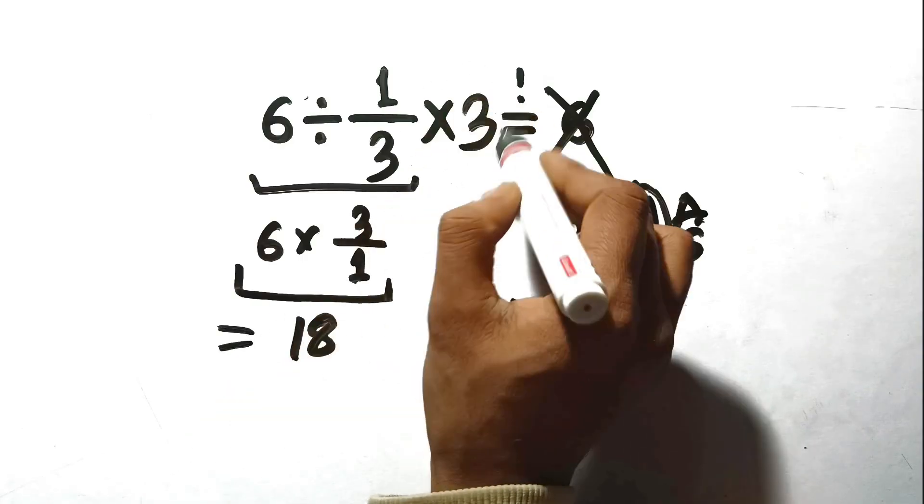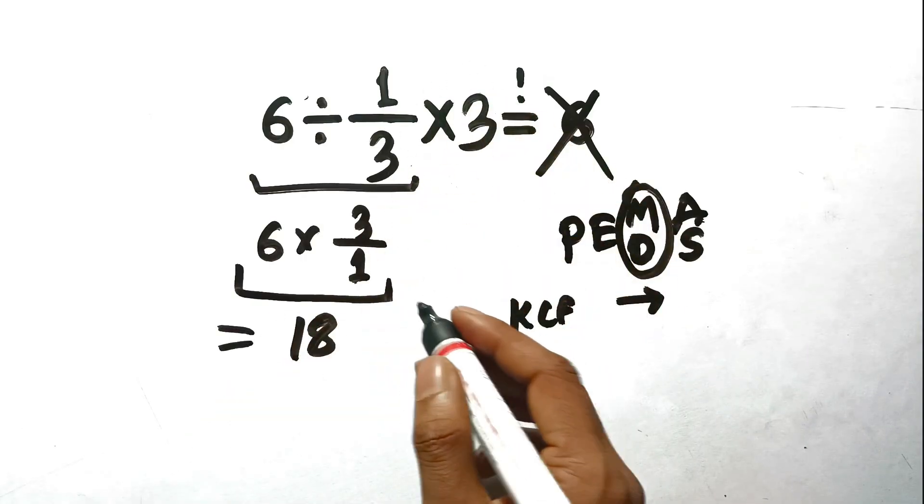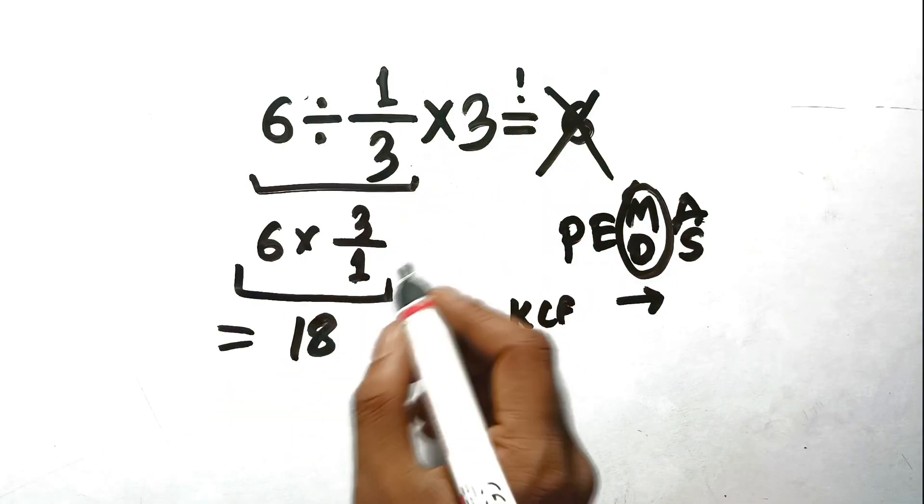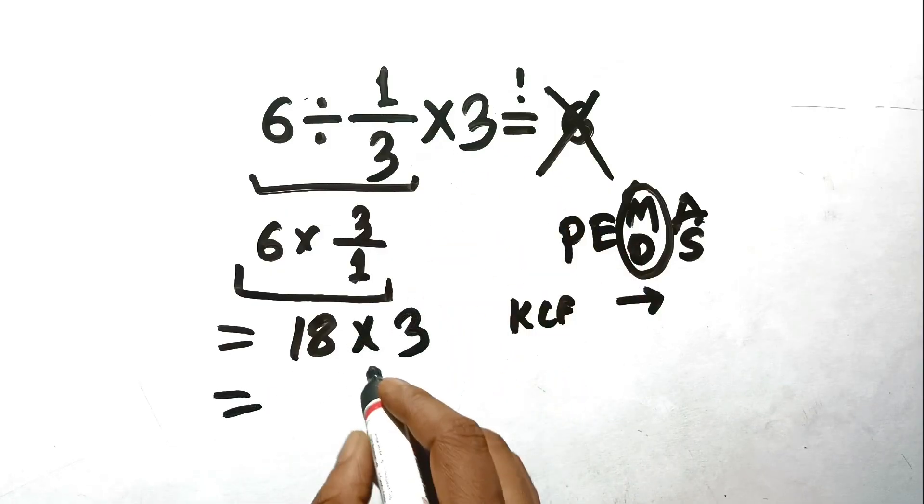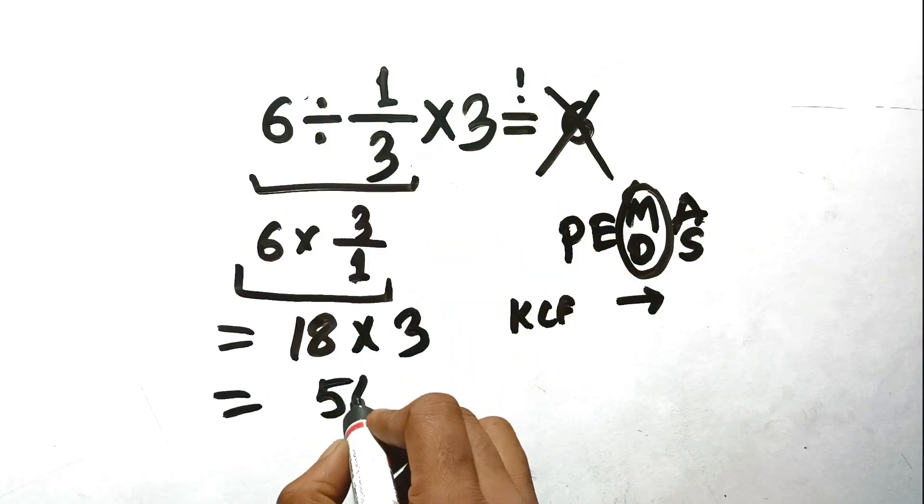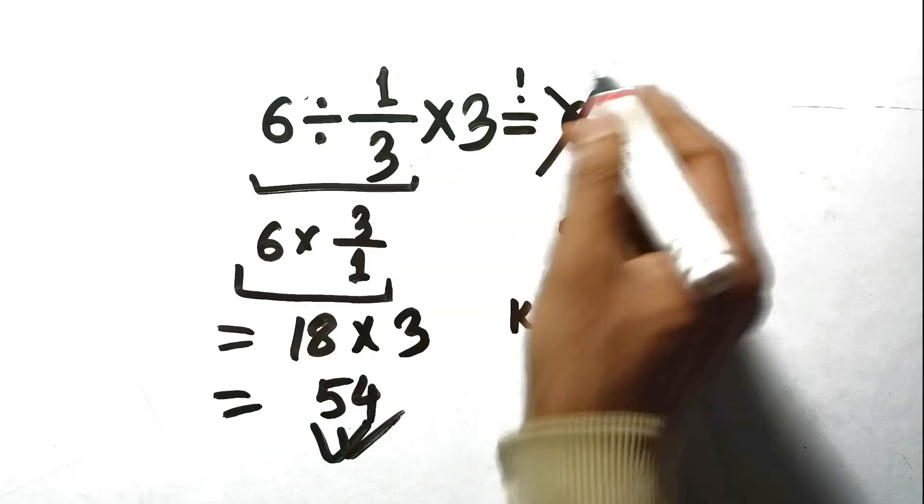We are not done yet, though. We still have that last times 3 waiting at the end. So we take our 18 and multiply it by 3. And 18 times 3 is 54. So the correct answer is 54, not 6.